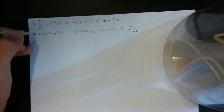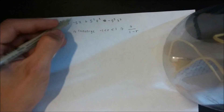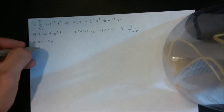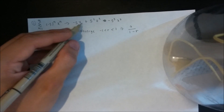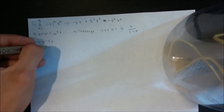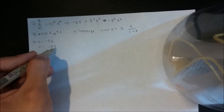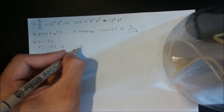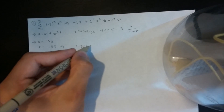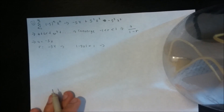So for this problem, we have that a equals negative 5x, the first term, and r would be negative 5x. For convergence, the absolute value of negative 5x must be less than 1.